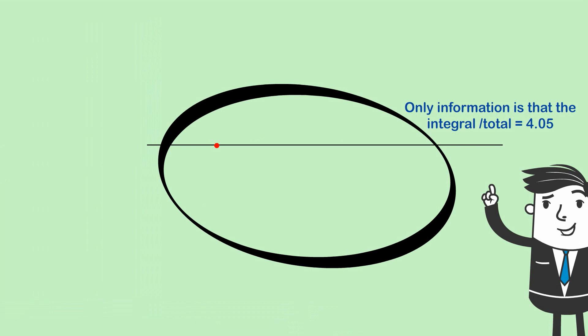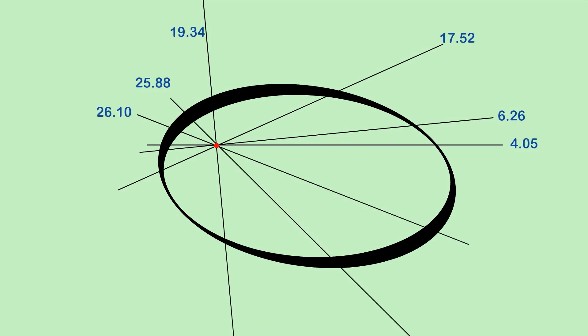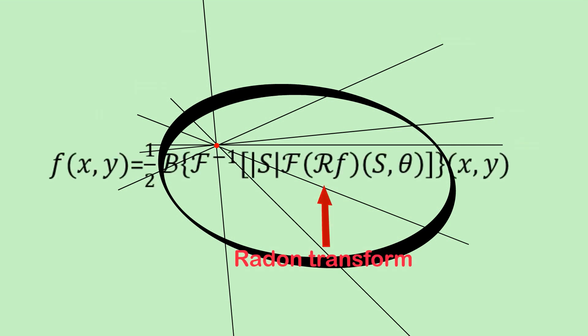So, Radon said, well, if that's all you're told, you can't work out the value at the red dot. But then he said, imagine that we start rotating the line but always going through the red dot. And we've actually got access to the integral or the total for every single line that goes through the red dot. Now, he said, you can actually work out the value of the red dot amazingly, using some quite complicated mathematics involving something that's now called the Radon transform.